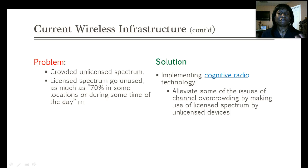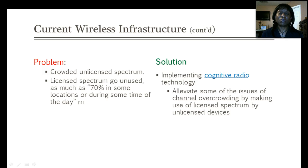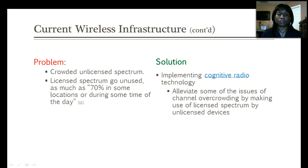One of the problems we are faced with now is the overcrowding of our unlicensed spectrum, as well as the fact that a lot of licensed spectrum is not being used — in some cases 70% of licensed spectrum at a given time is not being utilized. The solution to help fix this overcrowded problem and to utilize available bands on the licensed spectrum is cognitive radio technology, which tries to alleviate overcrowding by making use of licensed spectrum by unlicensed users.